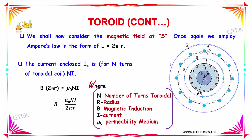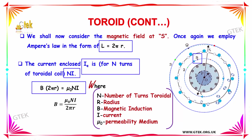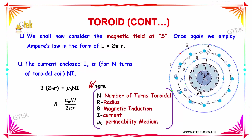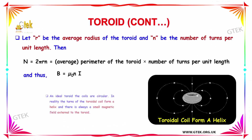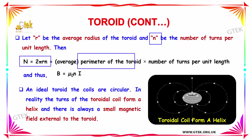We shall now consider the magnetic field at S. Using L = 2π R and enclosed current IE = NI for N turns, we get B × 2π R = μ₀ NI. Let R be the average radius of the toroid and n the number of turns per unit length, where N = 2π R × n. Thus B is equal to μ₀ n I.